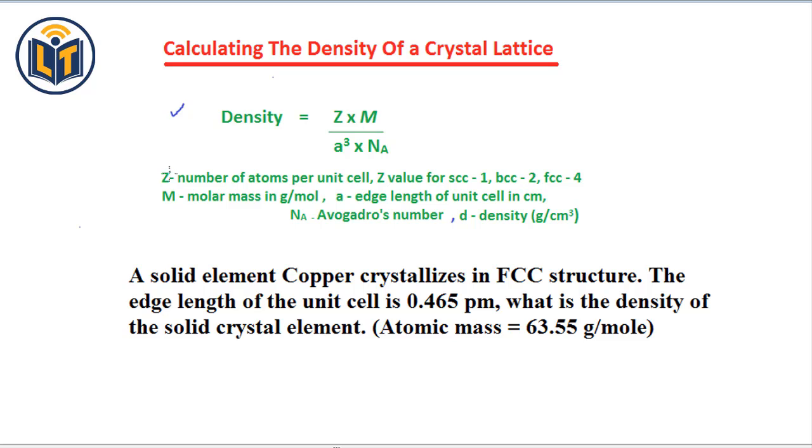Density is equal to Z times M divided by a cubed times NA, where Z is the number of atoms per unit cell. There are three unit cells: SCC, BCC, and FCC. For different unit cells, Z value is also different. Z value for simple cubic cell is 1, for body centered cubic cell is 2, and for face centered cubic cell is 4.